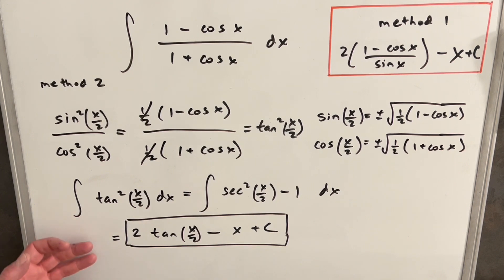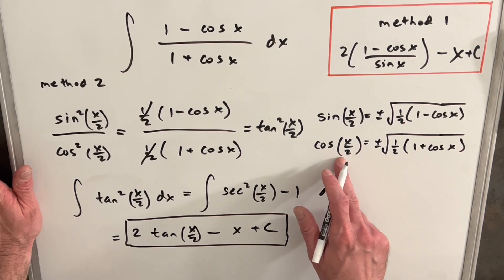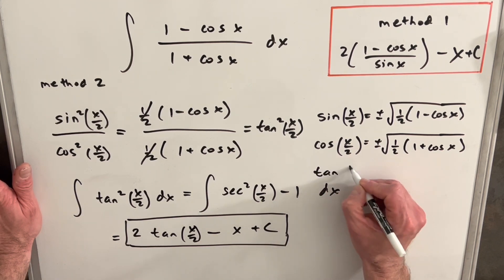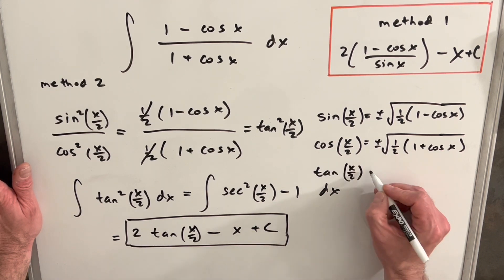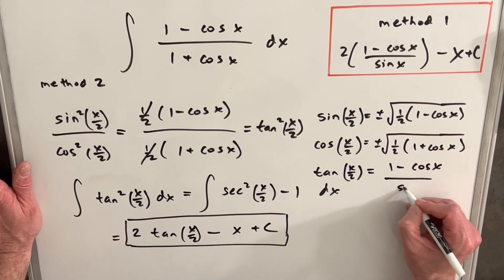And so this is our solution for method 2, and you might be wondering, is that equal to method 1? How are those equal? Well, we have another identity, and it's really just from taking this ratio of sin (x/2) and cos (x/2). And we have that tan (x/2) is equal to (1 minus cos x) over sin x.